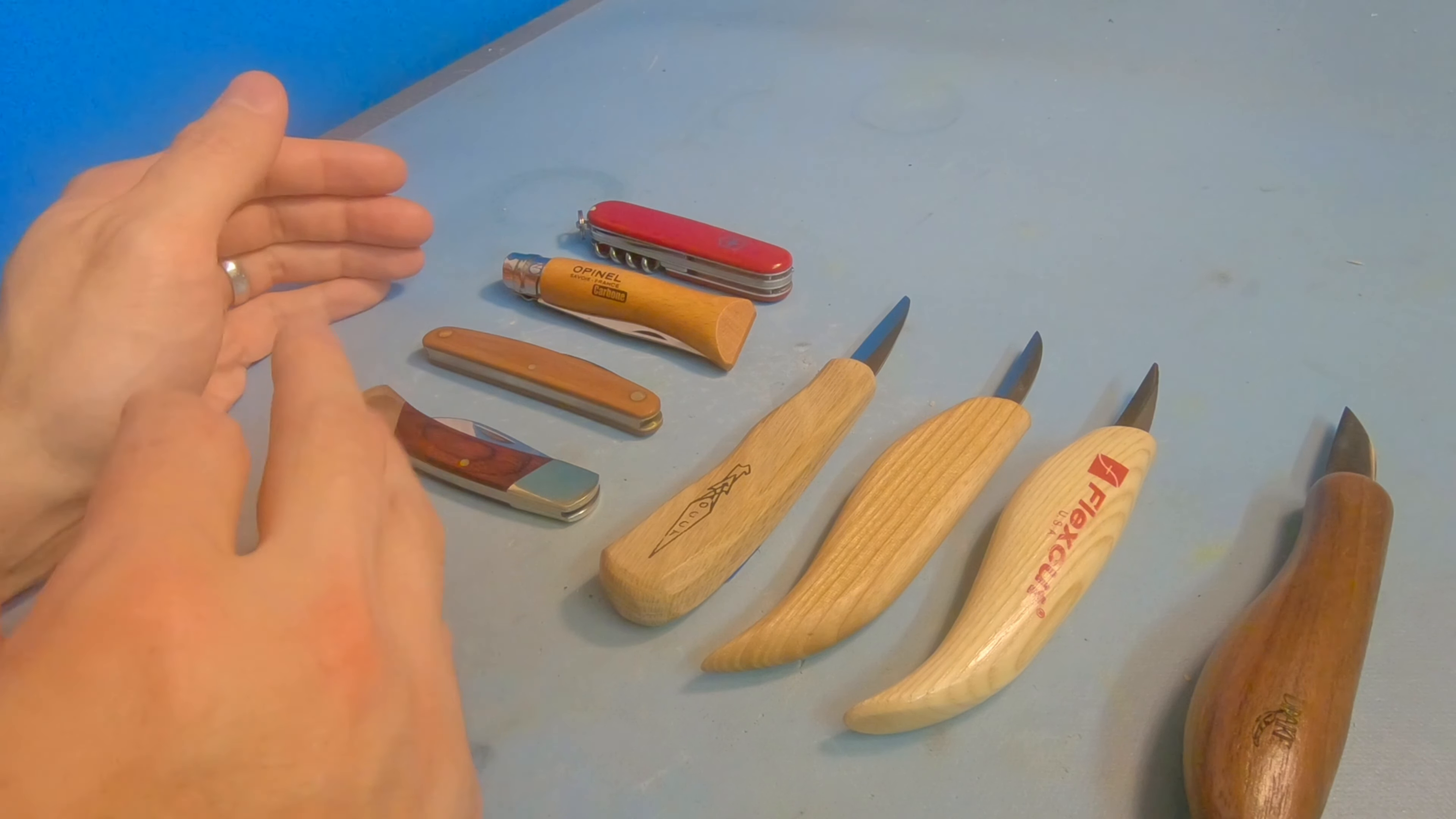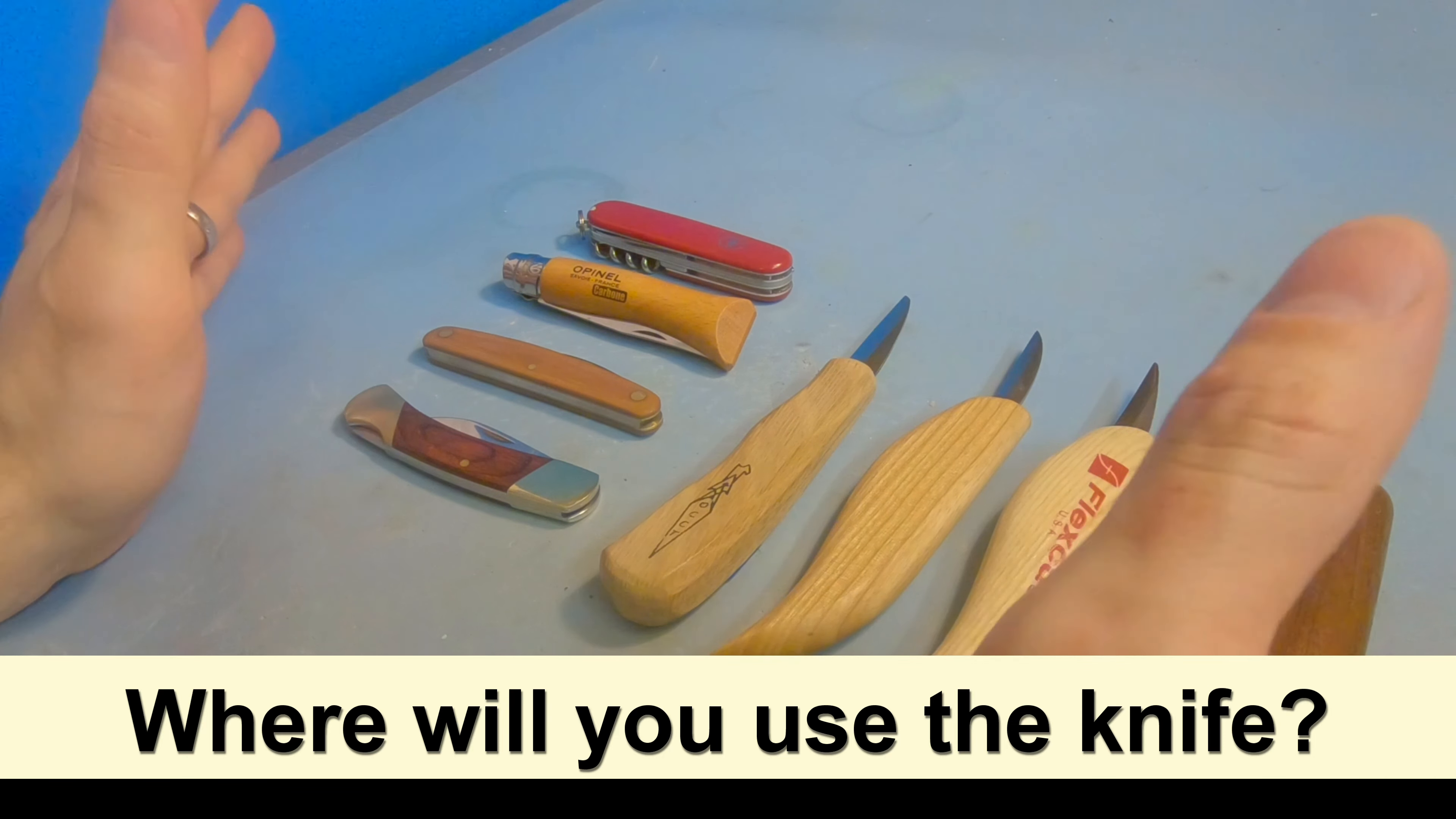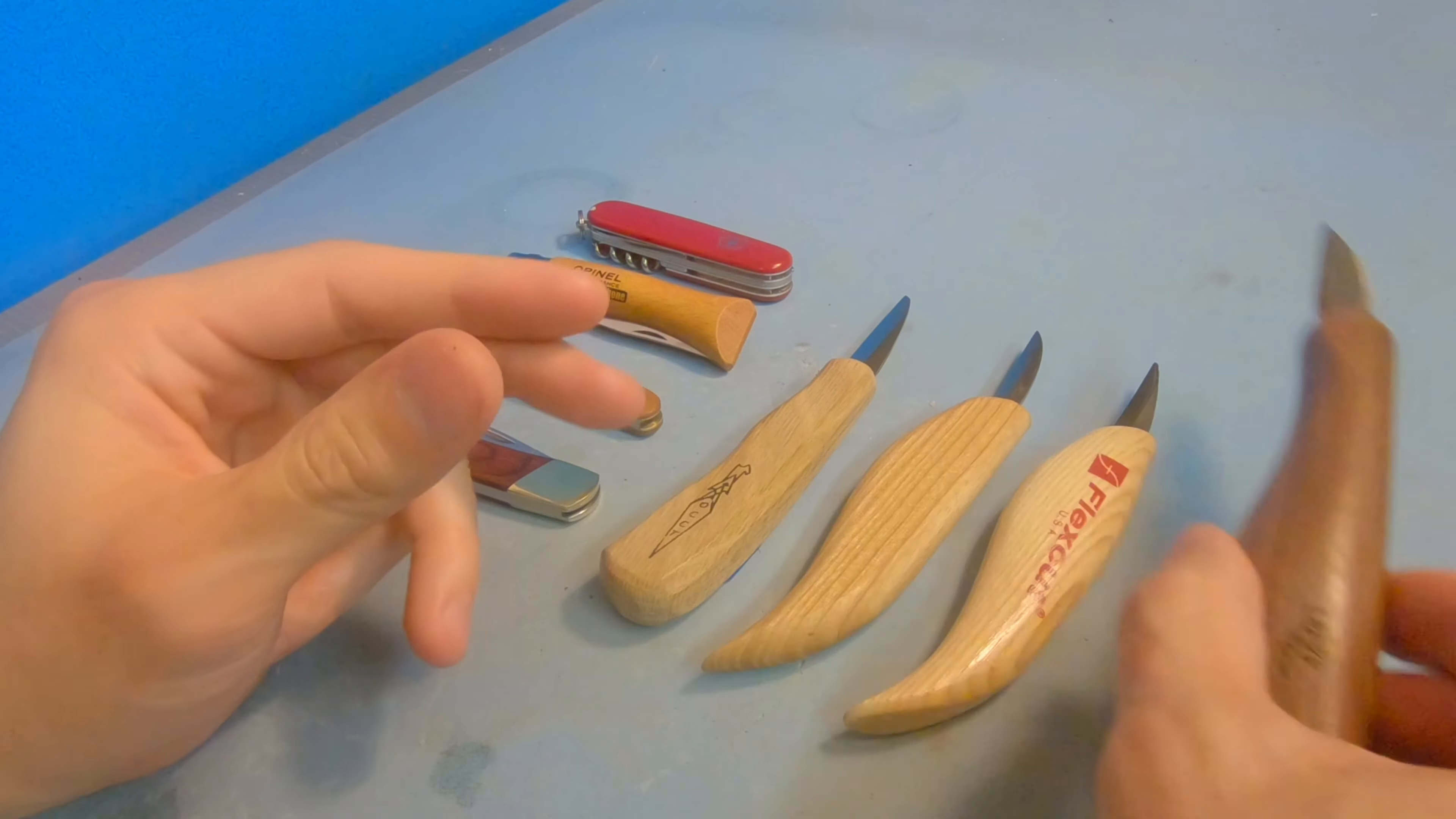The first and most important question you should ask when trying to decide between a fixed blade knife and a folding pocket knife for whittling is, where will you be using the knife? The two main types of places you're probably going to be using them is one, at a workbench like I am right now, or if you're out and about camping, hiking, or just away from your carving bench most of the time.